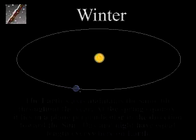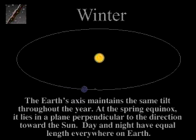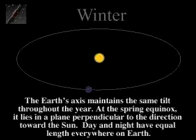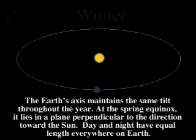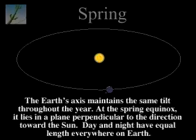The Earth's axis maintains the same tilt throughout the year. At the spring equinox, it lies in a plane perpendicular to the direction toward the Sun. Day and night have equal length.